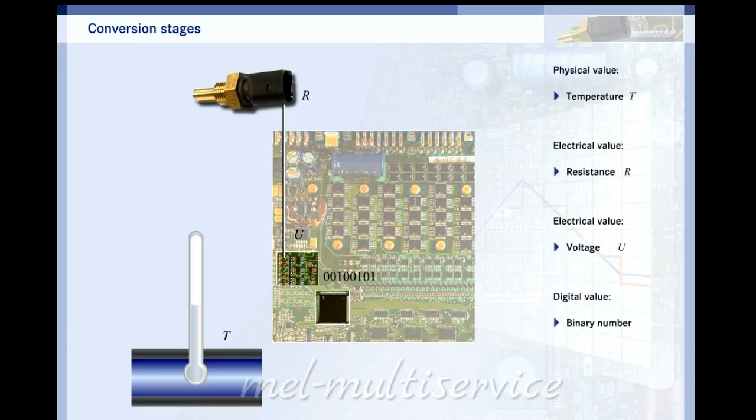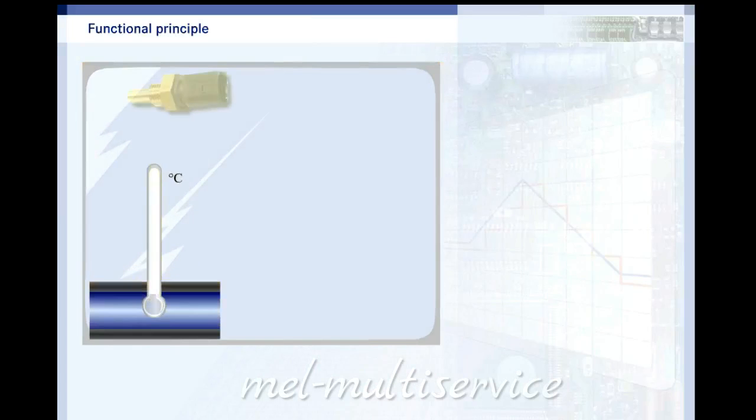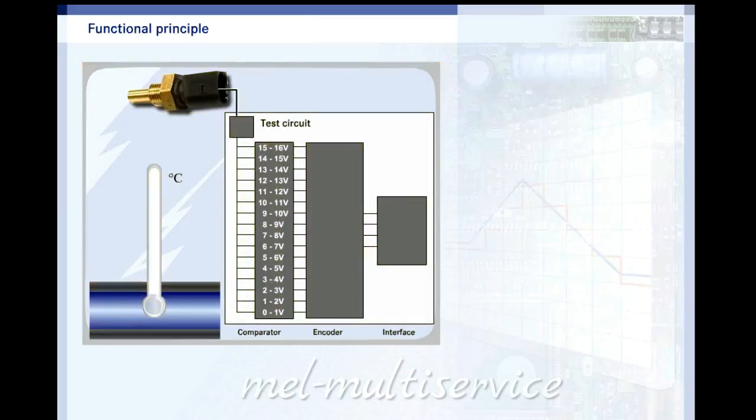The binary number is finally used in the calculations of the microprocessor. This is the basic structure inside an analog to digital converter. Select various coolant temperatures and watch what happens when you hold down the buttons.